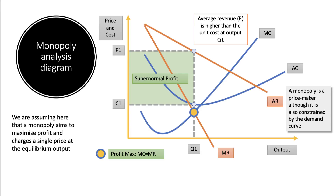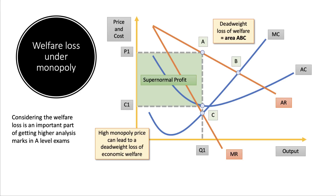Output is lower than we would want from a socially efficient point of view. Keep in mind, however, that monopolies cannot charge any price they want — the monopoly firm is always constrained by the demand curve, both the level of demand and the elasticity of demand. For higher analysis marks, it's important to include a welfare point. The allocatively efficient output is at point B where price equals marginal cost at output Q1, so there is a welfare loss shown by the triangle ABC. Showing this on a diagram is an important part of getting top analysis marks.